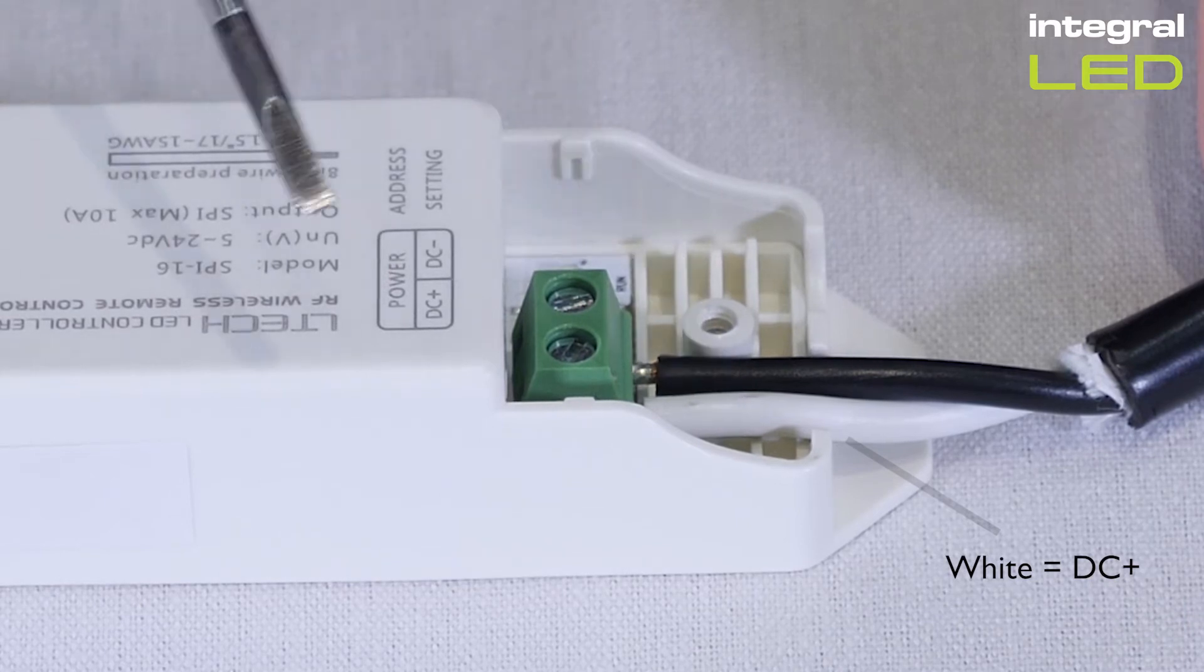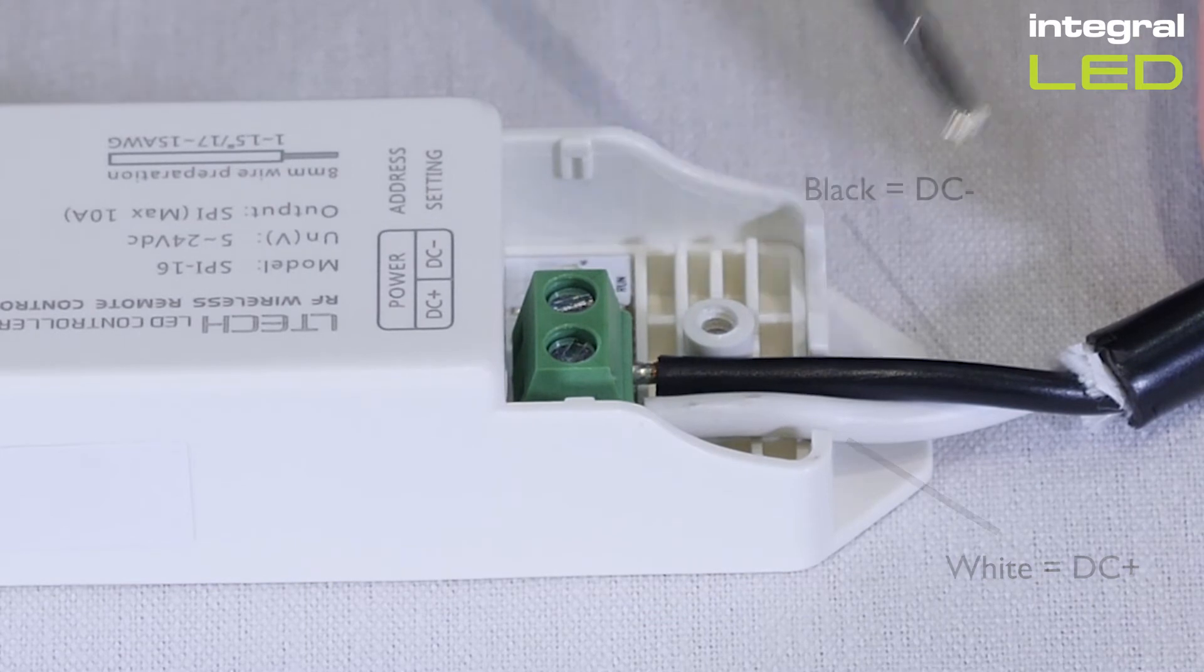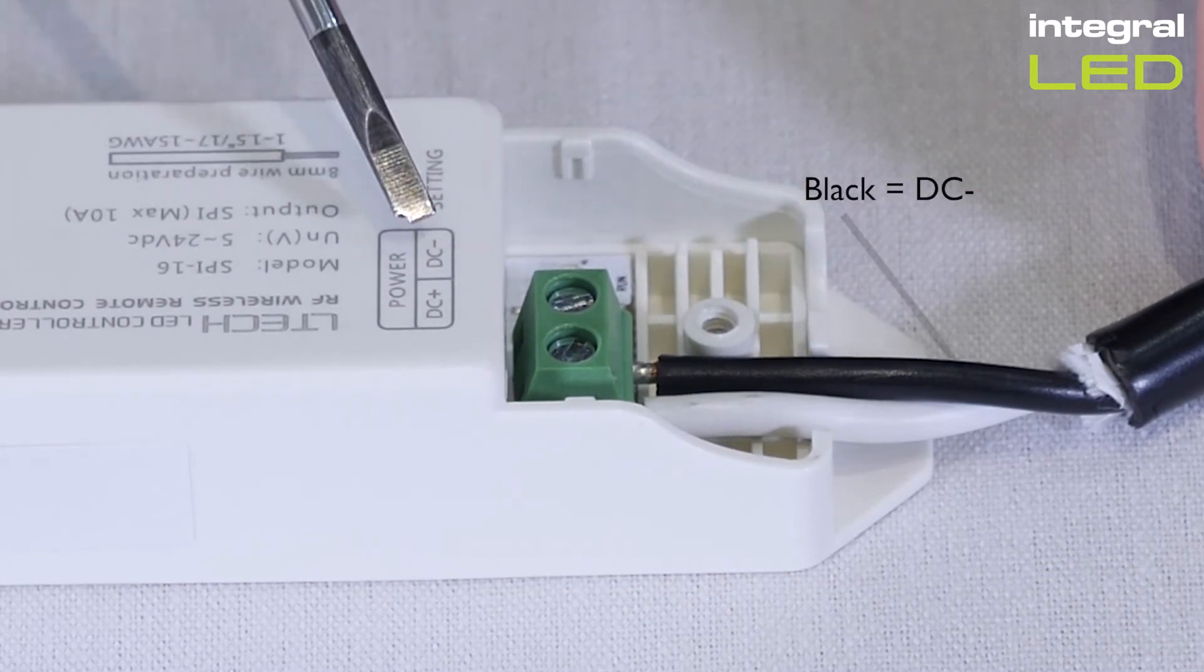To reiterate, the white, positive, wire connects to the DC plus terminal and the black, negative, wire connects to the DC minus terminal.